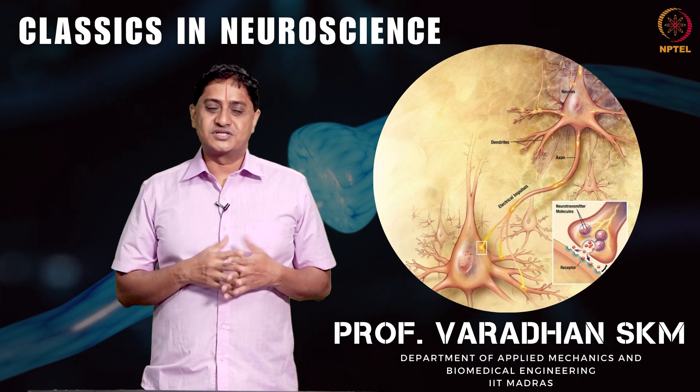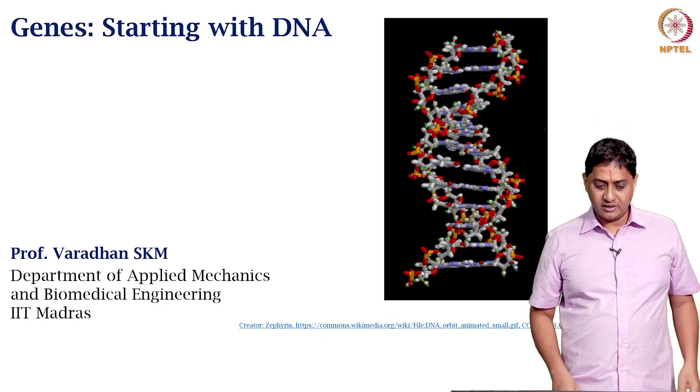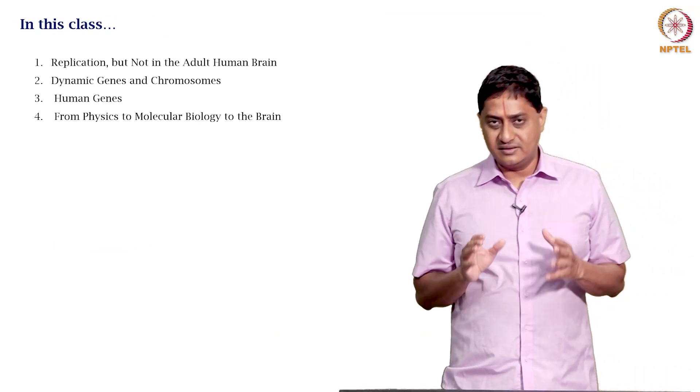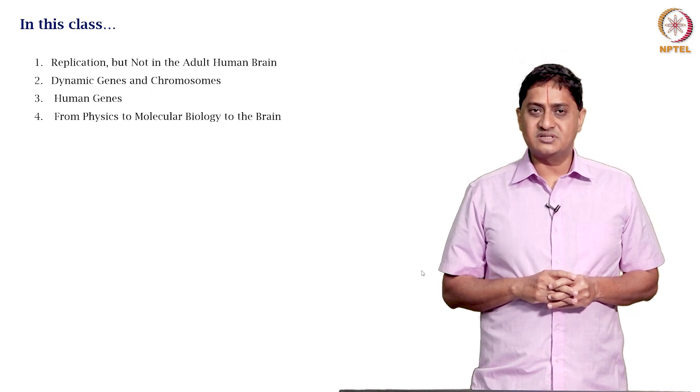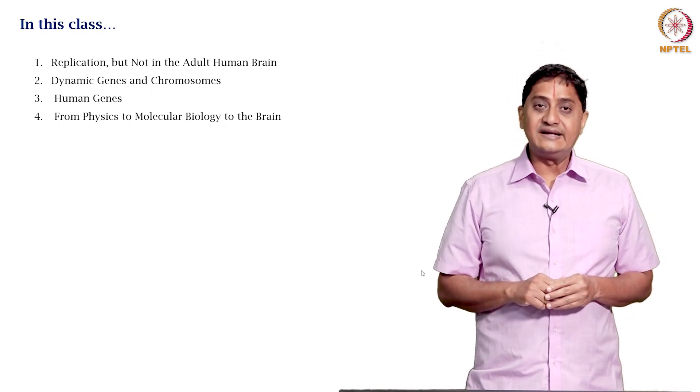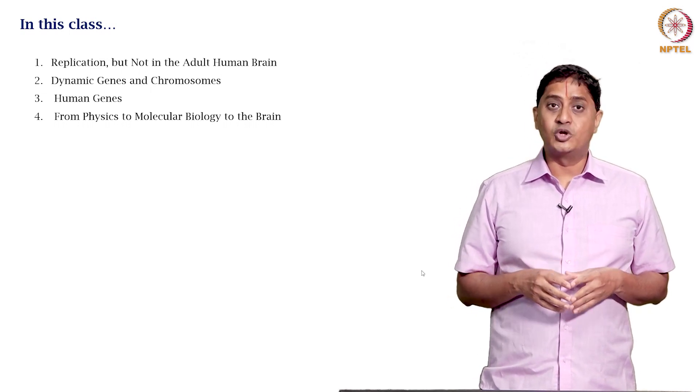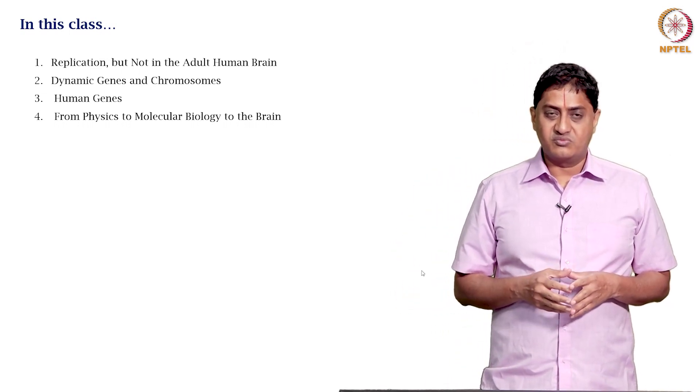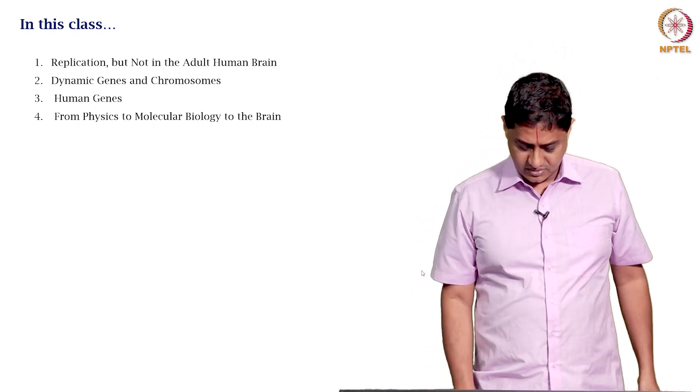Welcome to this course on Classics in Neuroscience. We have been looking at the discovery of structure of DNA. In this video, we will be looking at how replication happens, but not in the adult human brain, the dynamic genes and chromosomes, human genes, and how from physics we move to molecular biology to neuroscience of brain.